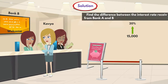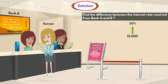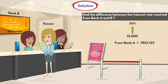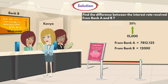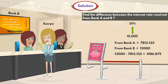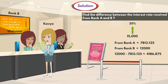Now the question asks for the difference between the interest received from bank A and bank B. The interest from bank A is 7,813.125 and from bank B is 12,000. So the difference is 12,000 minus 7,813.125, which equals 4,186.875 rupees.